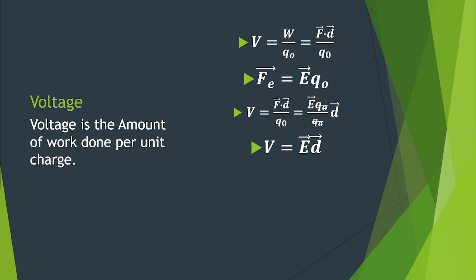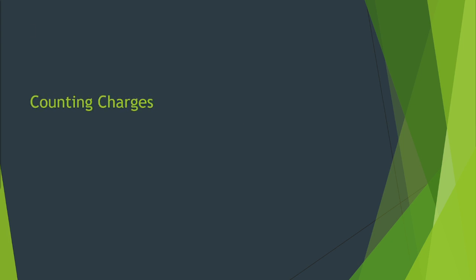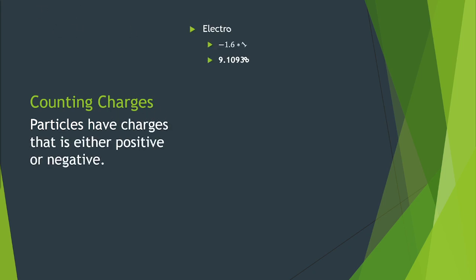We can try to formulate an equation to count charges. We should recall that particles have charges that is either positive or negative. Electrons have negative charge. It has a magnitude of negative 1.6 times 10 raised to the negative 19 C. The mass of the electron is 9.1 times 10 raised to the negative 31 kg. The proton has a positive charge and it has a magnitude of 1.6 times 10 raised to the negative 19 C. The mass of the proton is 1.6 times 10 raised to the negative 27 kg.